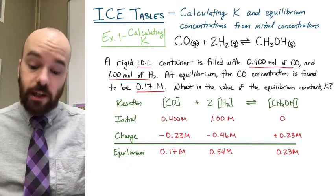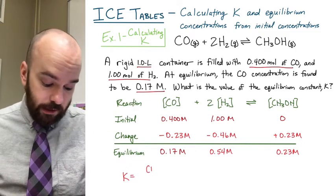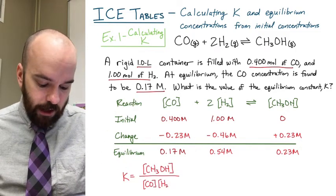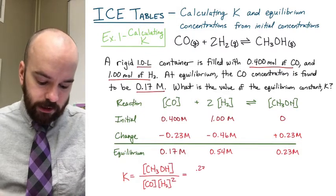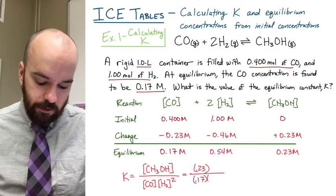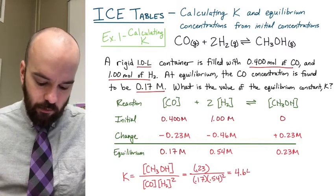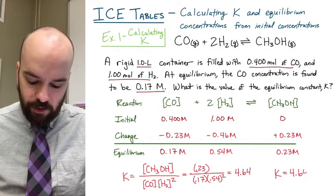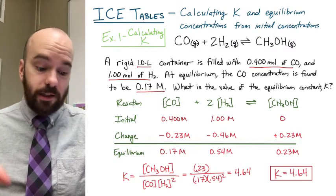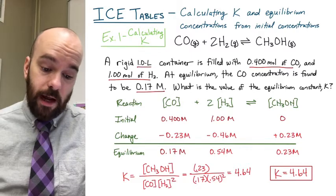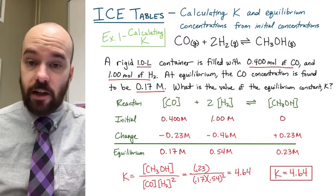From there, we just substitute those numbers into our K expression: methanol over carbon monoxide times hydrogen squared. Substituting those equilibrium values in and plugging them into the calculator gives us K equals 4.64. That's our equilibrium constant for this reaction at this given temperature.